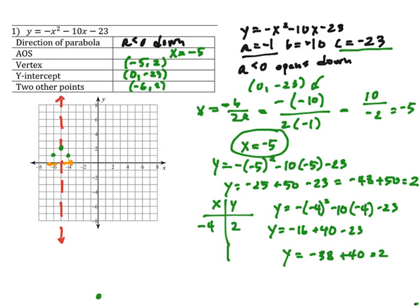Our other point was negative 4, 2. Right here. So now we can go ahead and graph our parabola. There it is. Good. Pretty green parabola. I'm done.